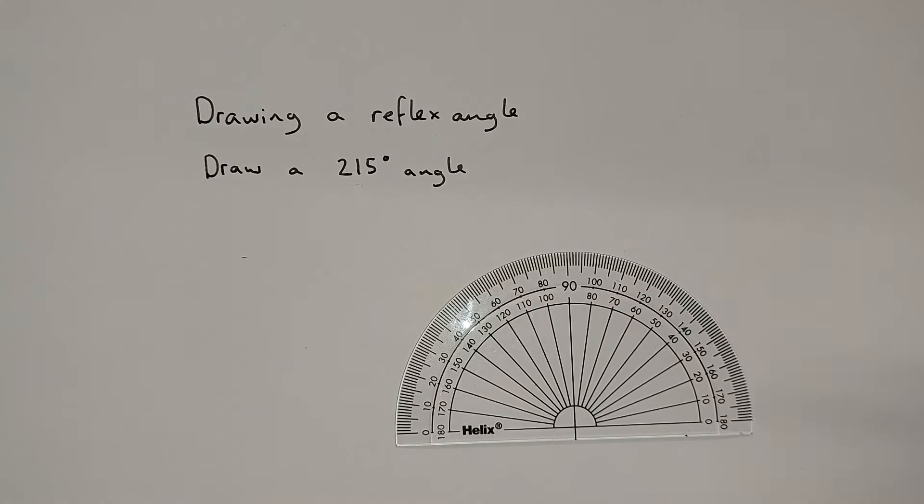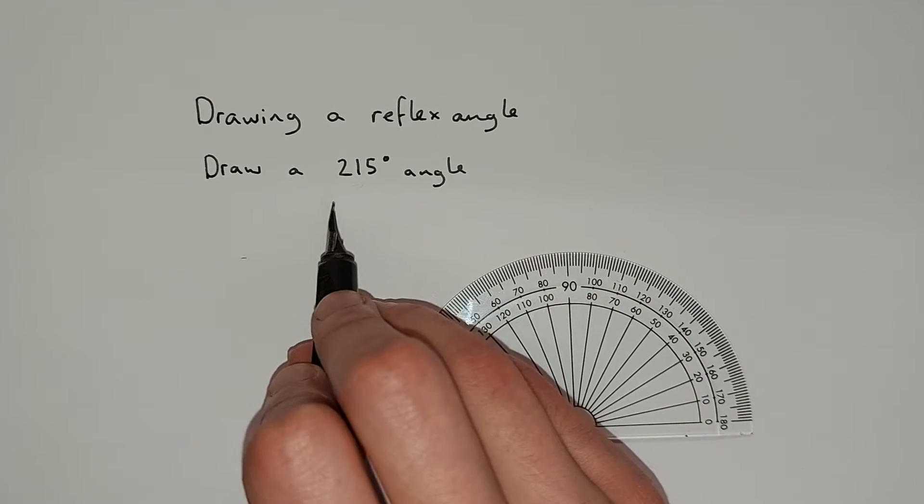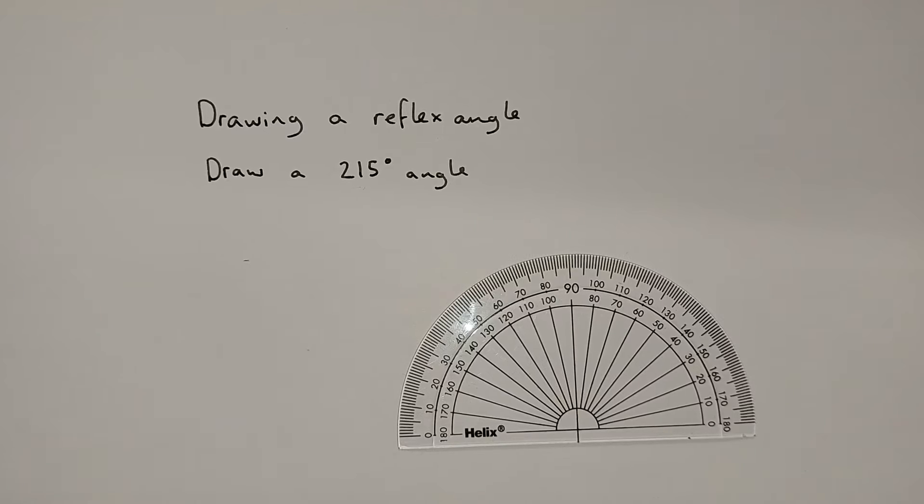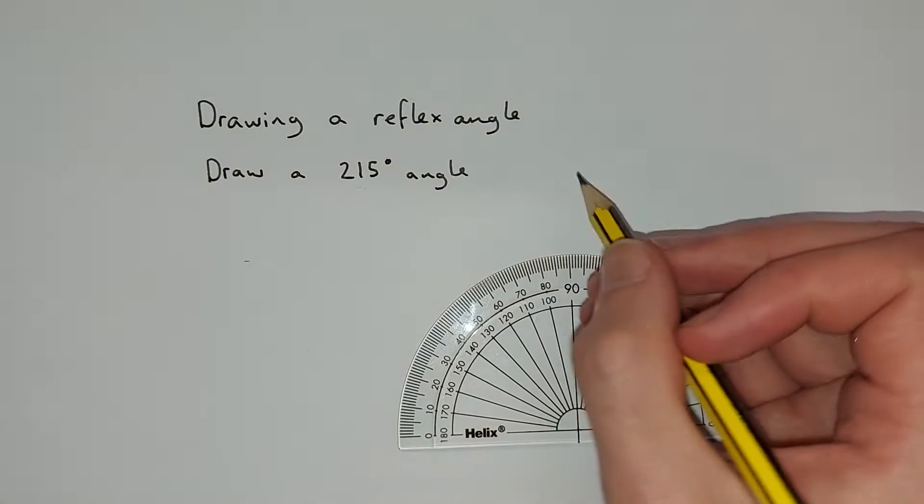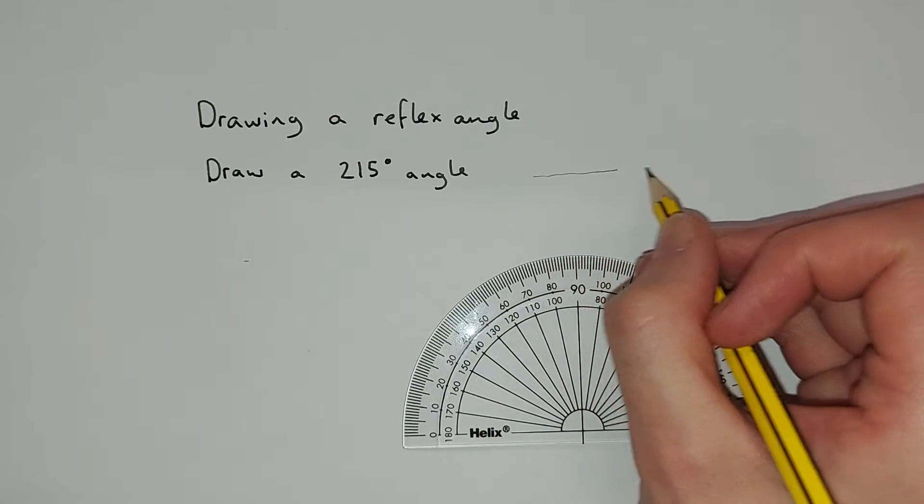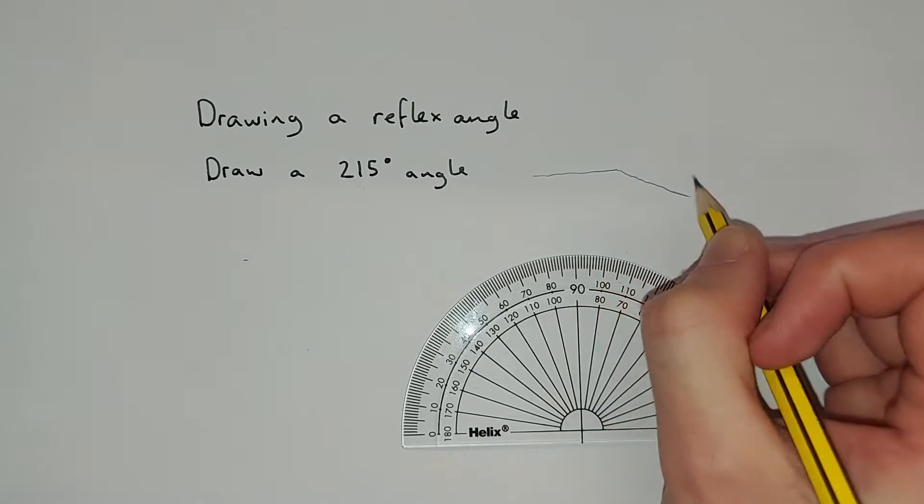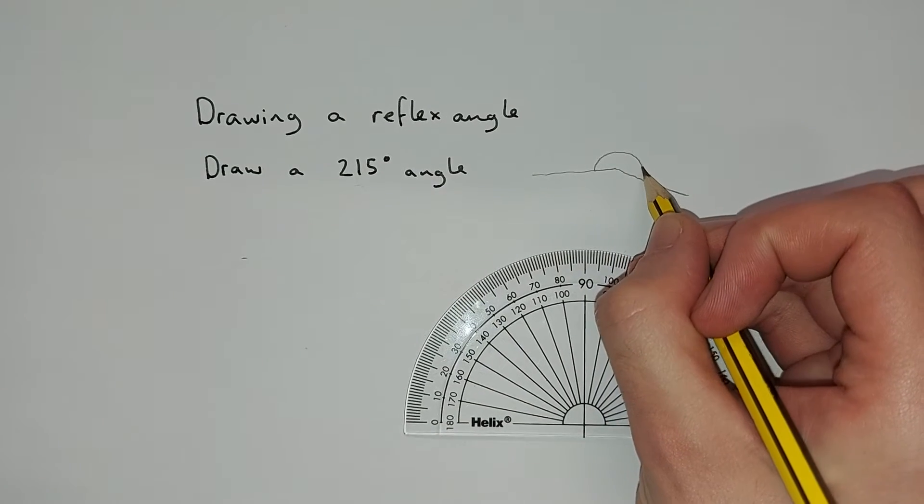So firstly, we cannot measure 215 degrees. Let me show you what it's going to look like. So 215 degrees is going to be just past a straight line. It's just a sketch to begin with. It's going to look something like this.